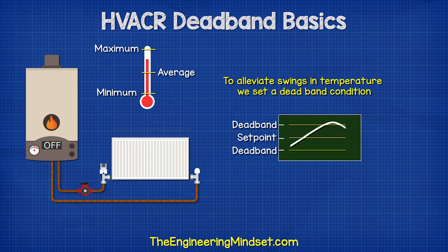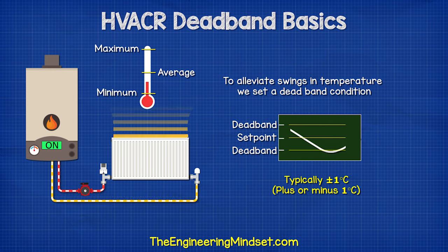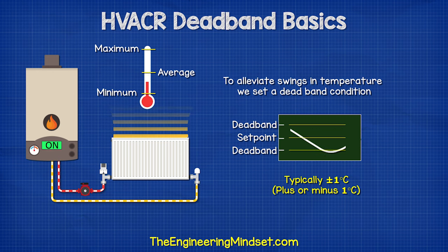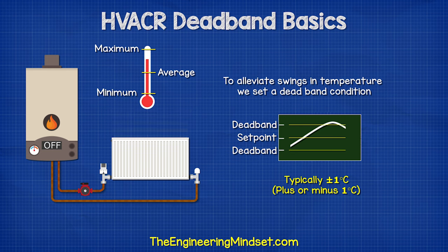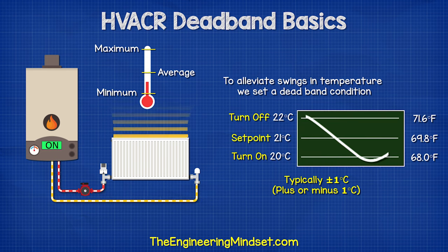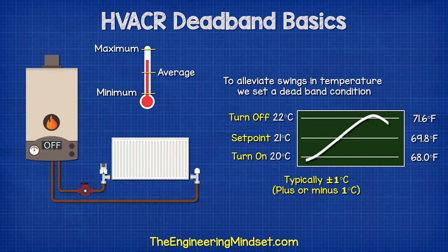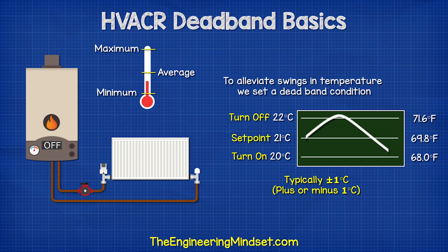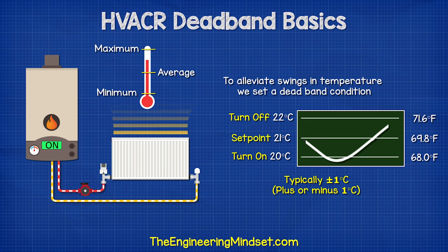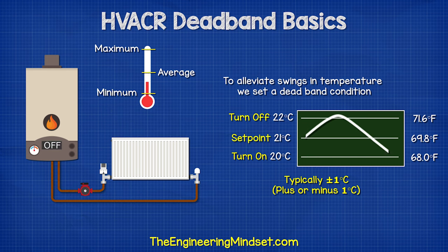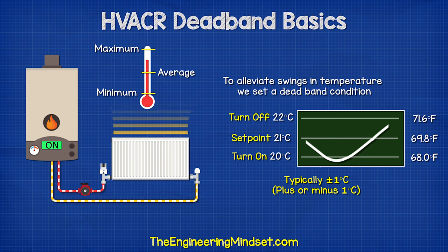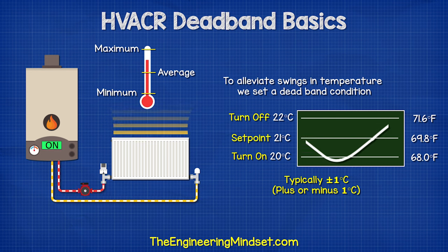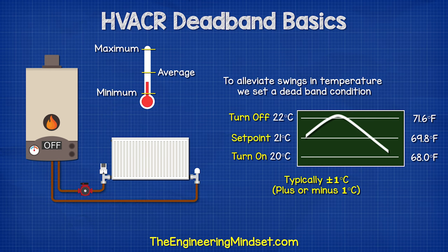To alleviate swings in temperature, we set a dead band condition, typically plus or minus 1 degree Celsius from the required temperature. For example, if we want a room temperature of 21 degrees Celsius and we have a dead band of plus or minus 1 degree, the heating will turn on when the room temperature falls below 20 degrees Celsius and will switch off when it is above 22 degrees Celsius. This gives us an average temperature of 21 degrees Celsius.